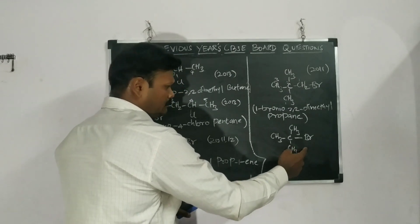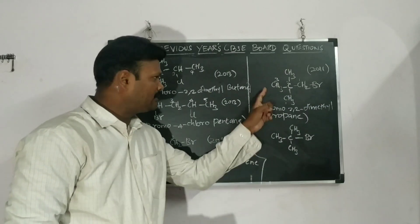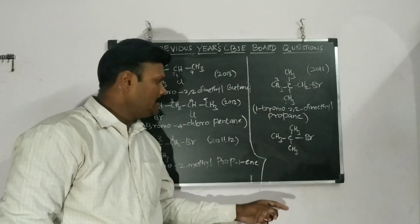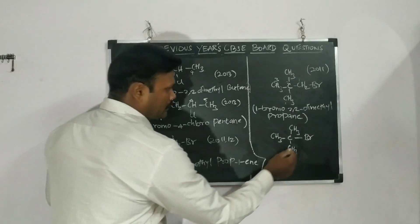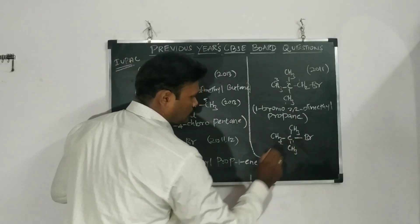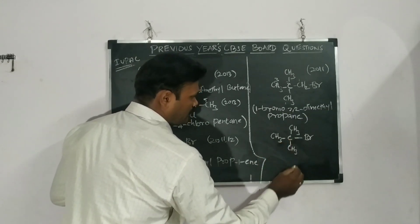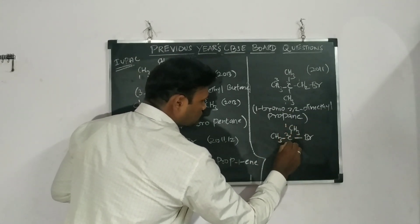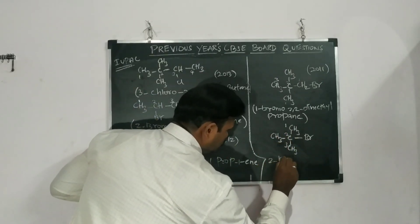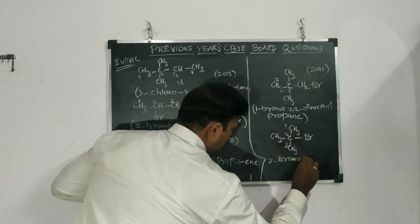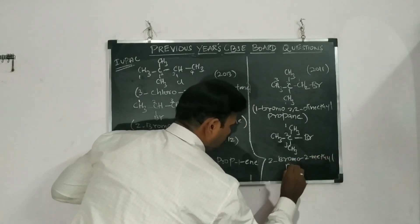This next compound was not asked in any particular year, but I want to show the difference between these two compounds. You should not take this direction as the main chain — that is only two carbons. The longest carbon chain is one, two, three — three carbons. So we name it 2-bromo-2-methylpropane.